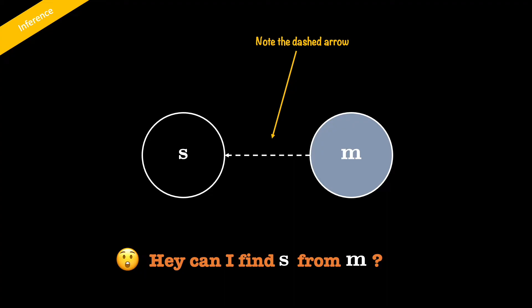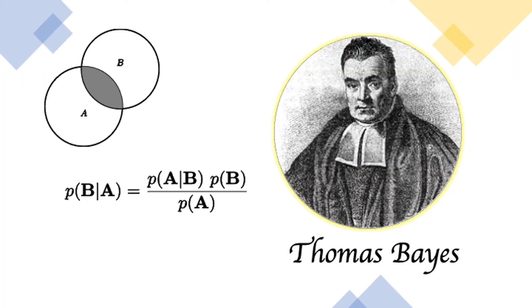So how does one find the cause given an effect? This is where we will take help from the amazing Thomas Bayes, as this is the kind of problem he was chasing. He was curious about understanding the relationship between two events and how one could get one event given the other. Bayes rule or Bayes theorem is what will help us get our state from the measurement. So let's see how we could formulate our problem using his rule.